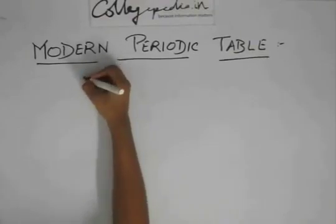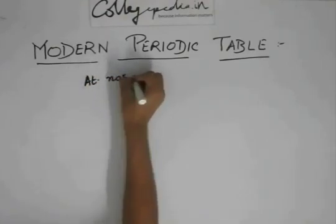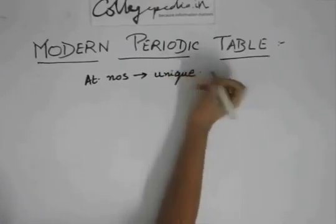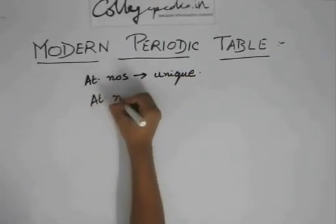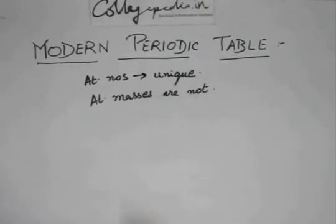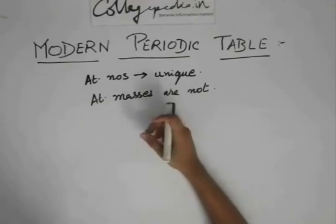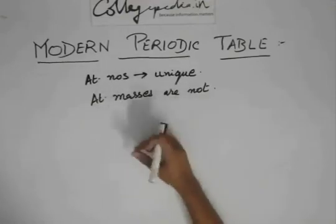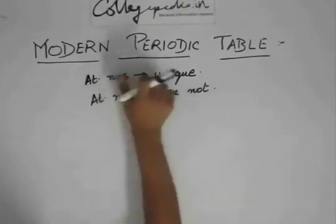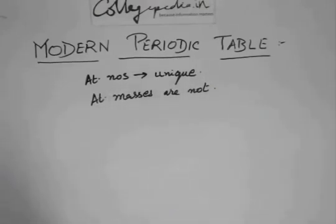This resolves many problems because the atomic numbers of each element are unique, but atomic masses are not. So if we have two elements with the same atomic mass, we can't place them or we have to place them in the same slot. That will be a disadvantage. But the atomic number, since they are unique, then every element can be placed in its own unique slot in the periodic table.